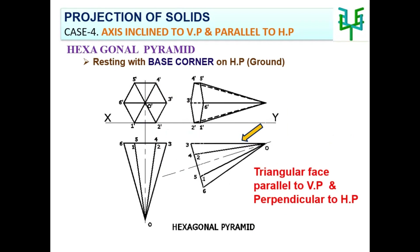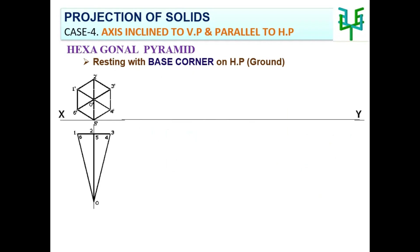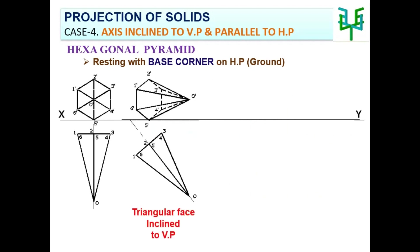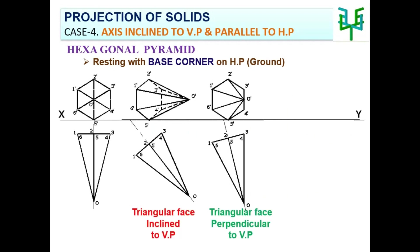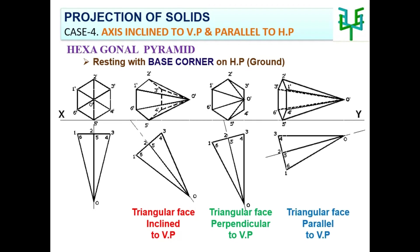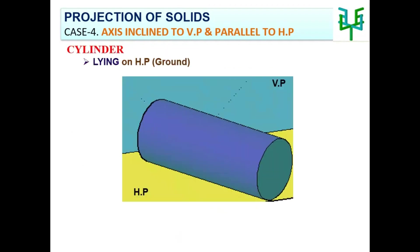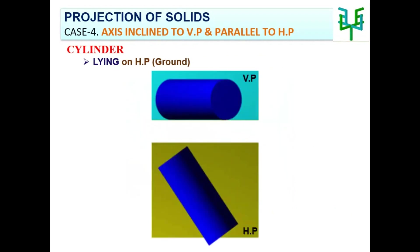Triangular face inclined to VP, triangular face perpendicular to VP, triangular face parallel to VP. Cylinder lying on the ground with its axis inclined to VP.